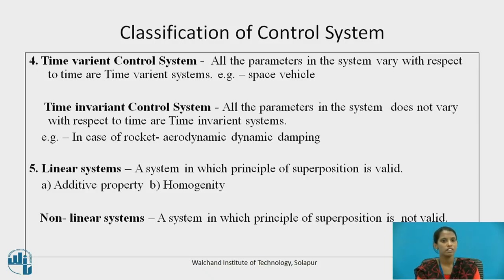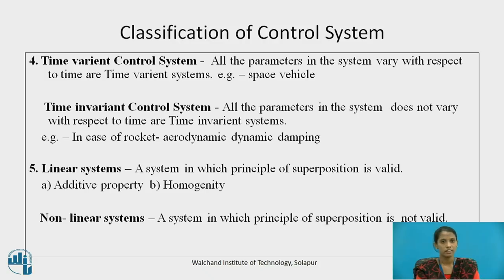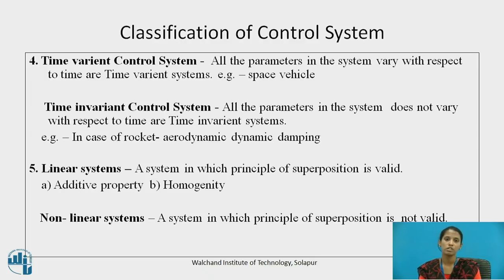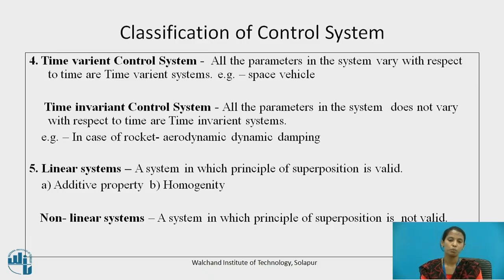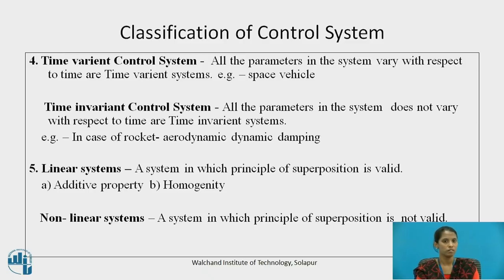Linear system: a system is called linear if the principle of superposition is valid — that is, it must follow two rules: first, the additive property, and second, homogeneity. If a system does not follow the principle of superposition, it is said to be a non-linear system. In a linear system, the output is directly proportional to the input; in a non-linear system, the output is not proportional to the input.